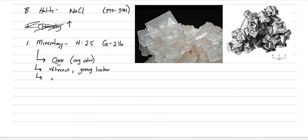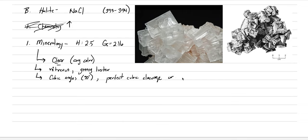Looking at crystal form and cleavage, there are some very diagnostic things. Salt grows as cubes and also cleaves as cubes, so we look for cubic angles — 90-degree angles. We don't have to see perfect cubes; they could be rectangles, but we're looking for 90-degree angles produced by perfect cubic cleavage.